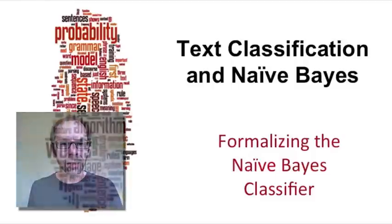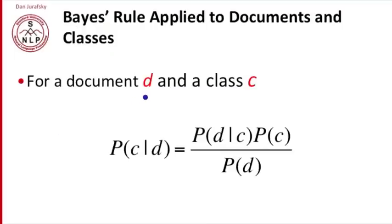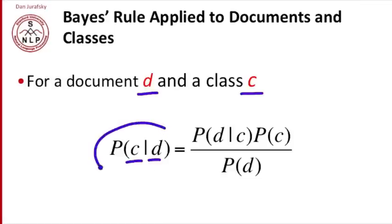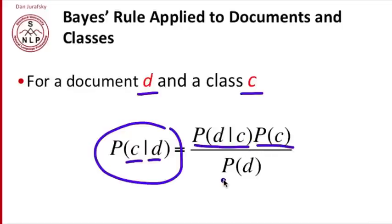Let's now formalize the Naive Bayes classifier. In classification, we have a document D and a class C. Our goal is to compute, for each class, its conditional probability given a document. We're going to use this probability to pick the best class. By Bayes rule, the probability of a class given a document equals the probability of the document given the class, times the probability of the class, over the probability of the document.